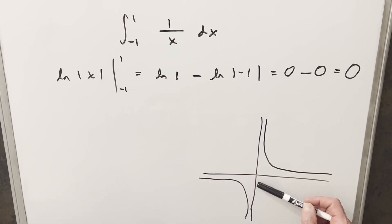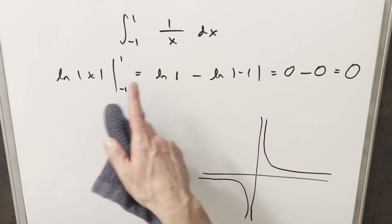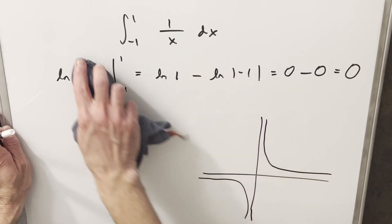So we actually have a vertical asymptote at 0. So this function is not actually continuous on this interval. So we can't just integrate over these bounds. We need to break it up into two integrals.